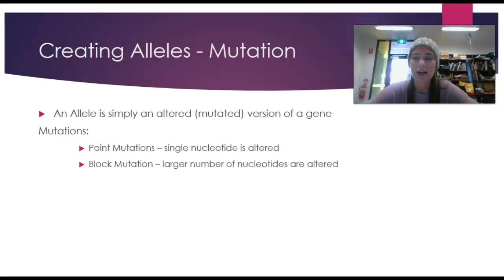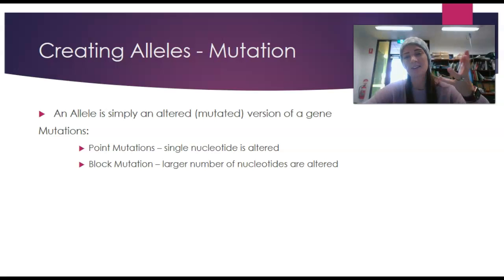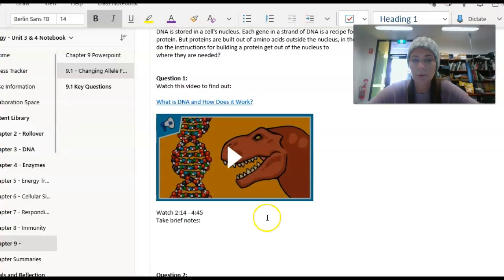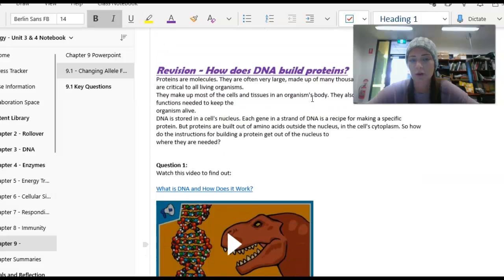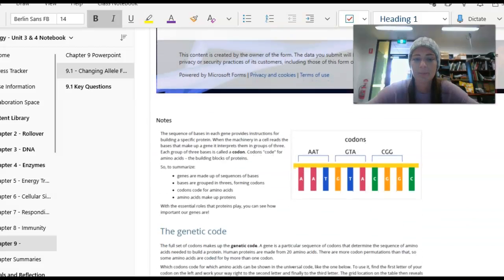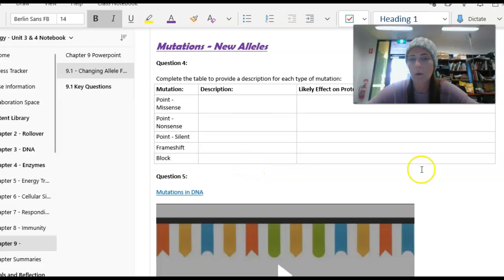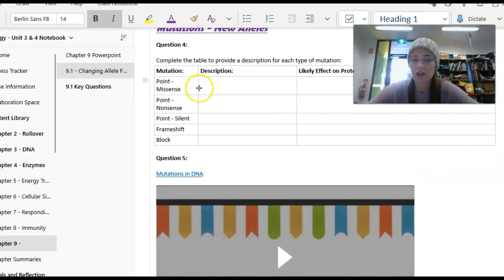Creating alleles - how do we get variation into a population? How do new alleles come into a population? It is random; it is through mutation. It's not a supply and demand scenario - it's not that there's a need to breathe underwater and so organisms evolve the ability. The mutation comes about randomly. If it's an advantage, then it will persist in the population. New alleles can enter a population through mutations in five specific ways.